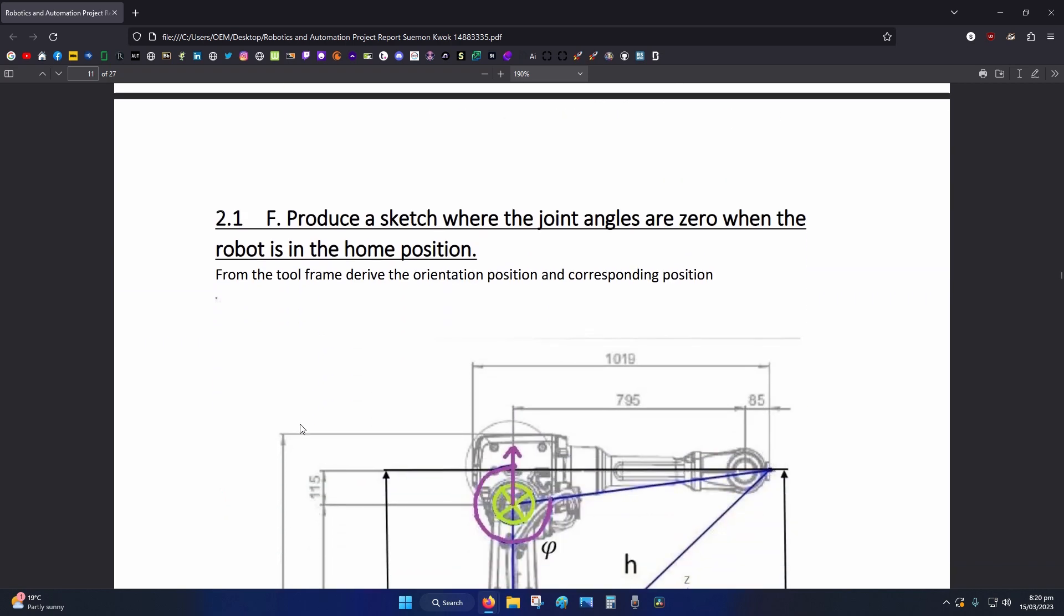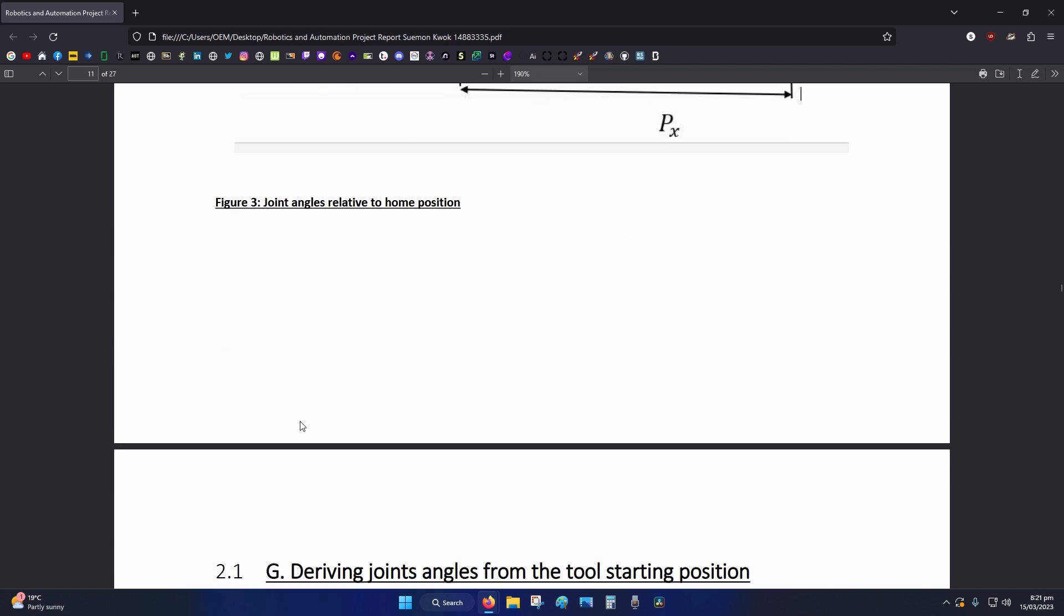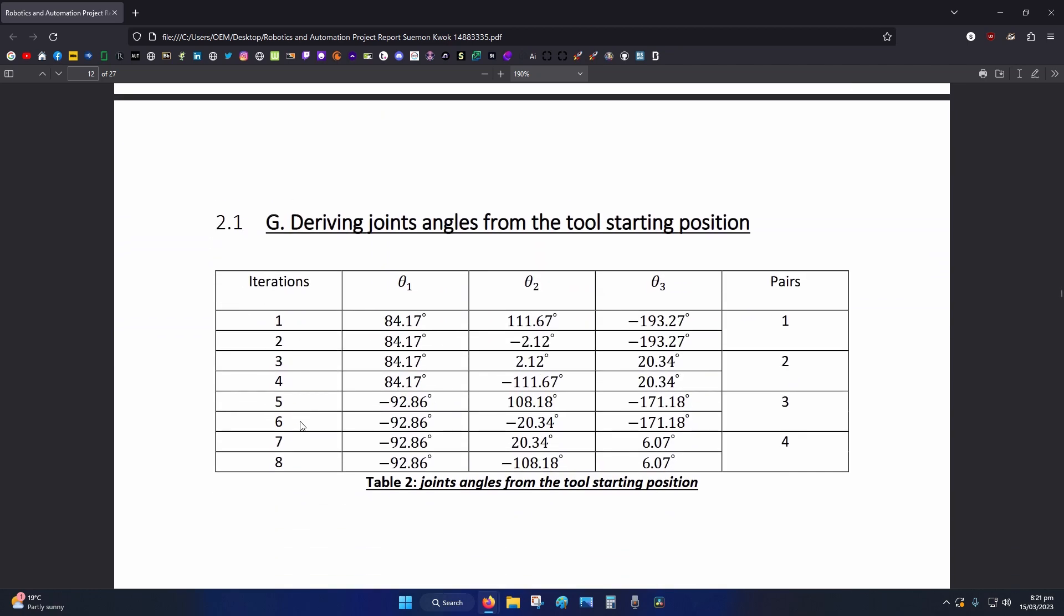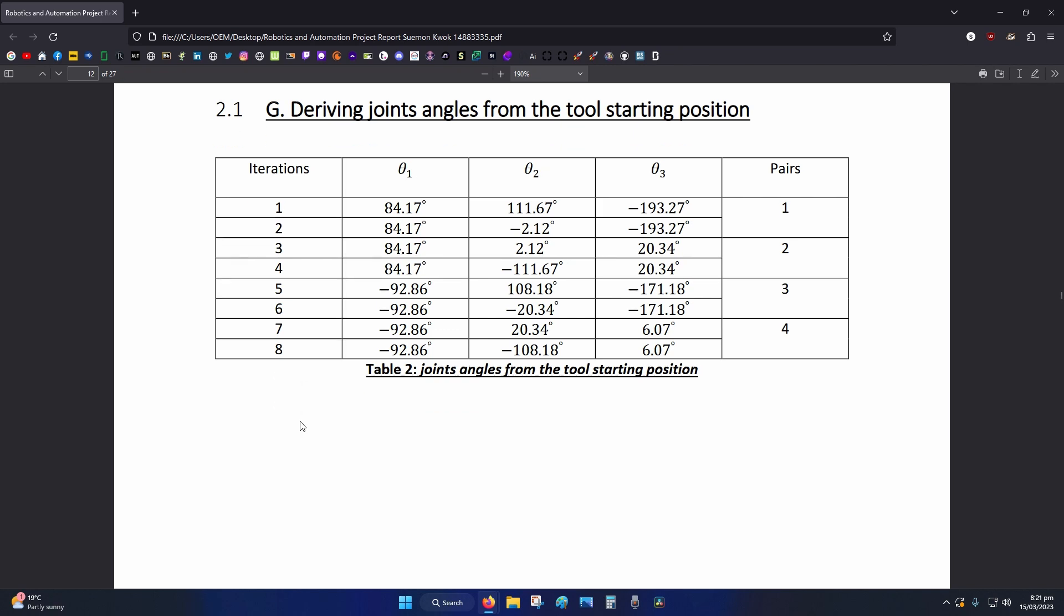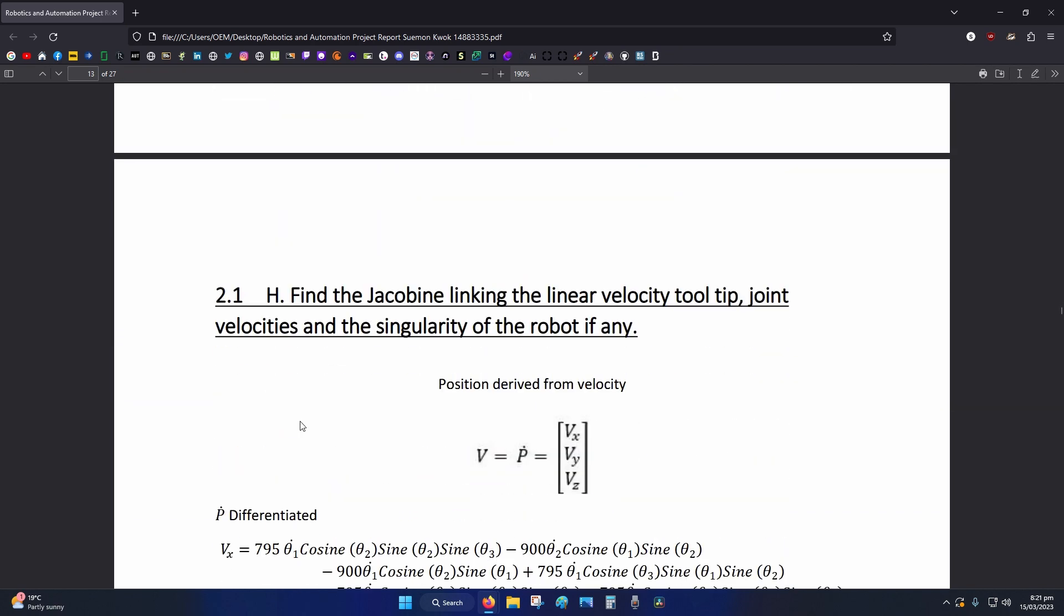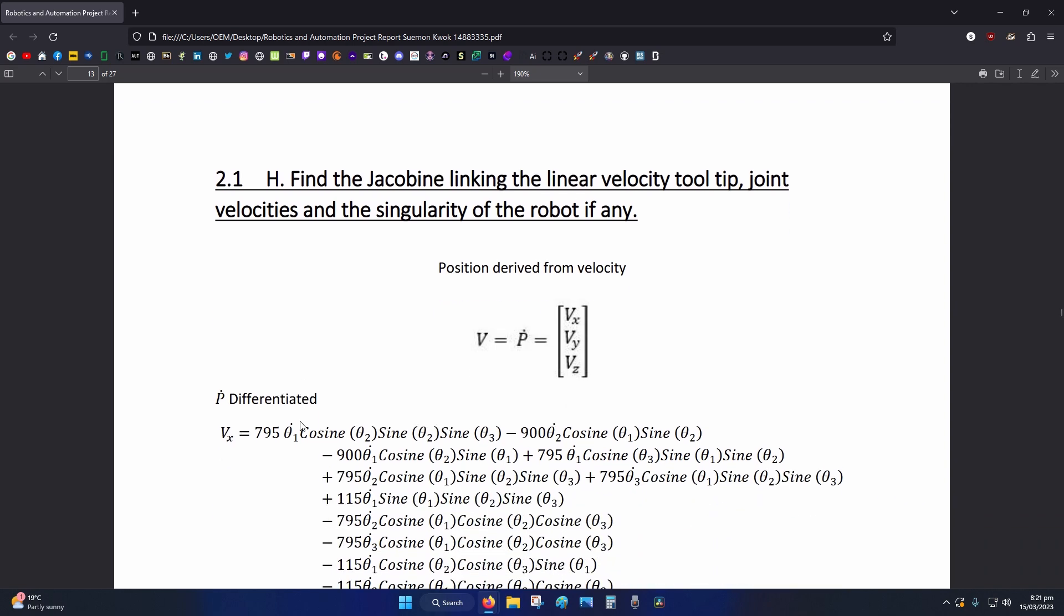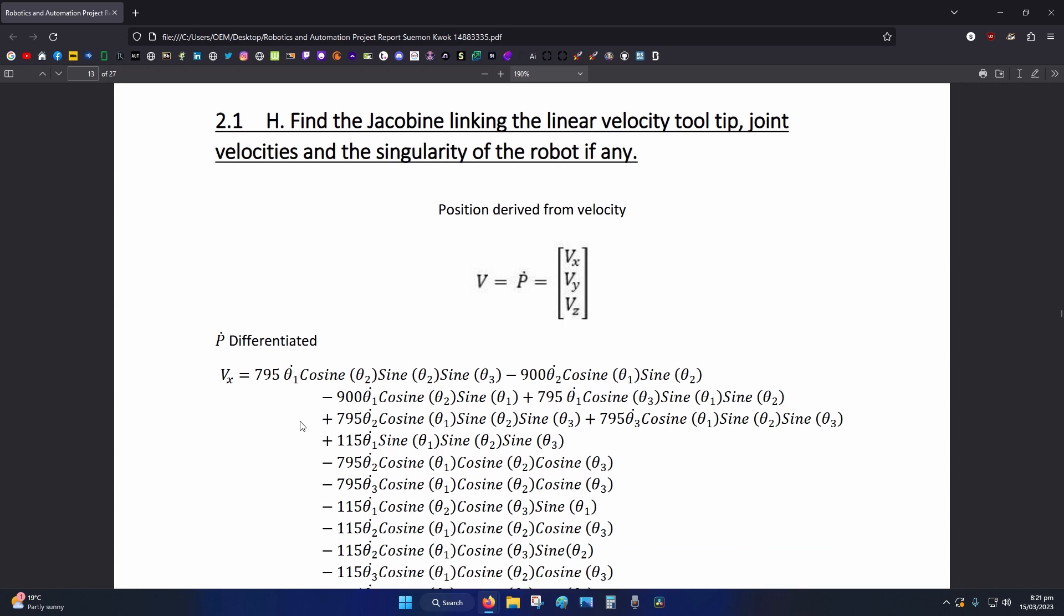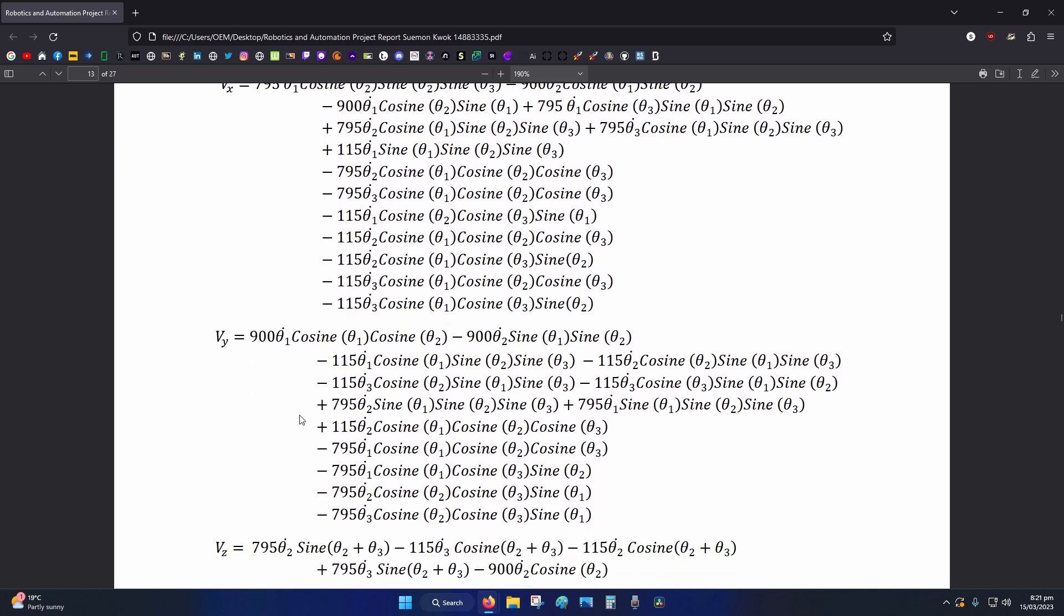Produce a sketch of the home position, that's not too bad. More angles of deriving. Find the jacobian linking the linear velocity tooltip joint velocities and singularity of the robot if any. Bear in mind this was during the pandemic, so the professor did make it harder because he knew that everyone would team up. But honestly this was so rough.